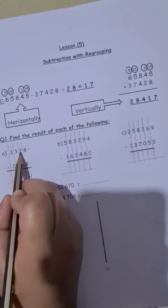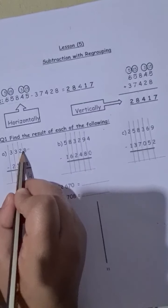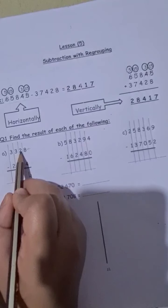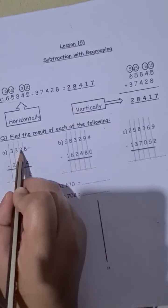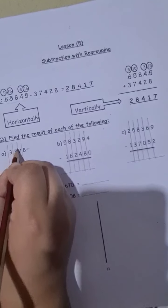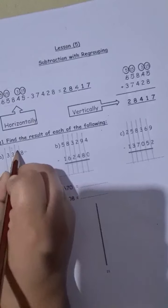So 8 minus 4 is 4. Then we go to the next place, which is the tens, 2 and 6. And I will say my song, more on top, no need to stop. Is it more on top? No. So we are going to knock the door on our neighbor, which is 3. I will take from it 1, so it becomes 2, and the 2 becomes 12.